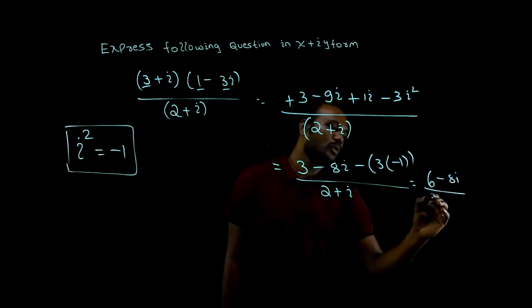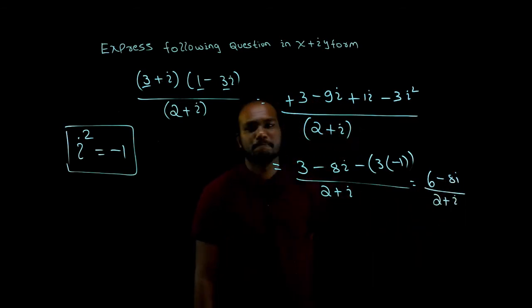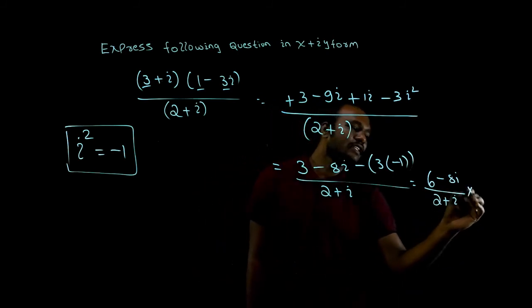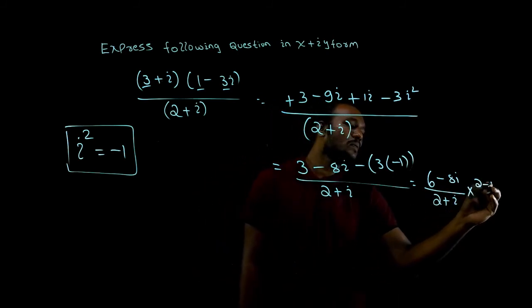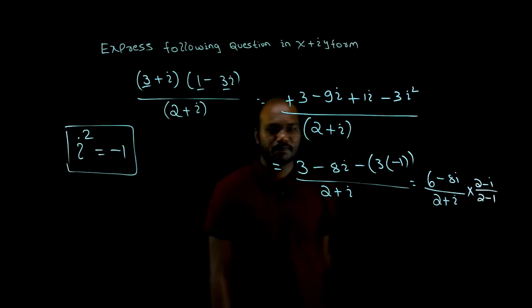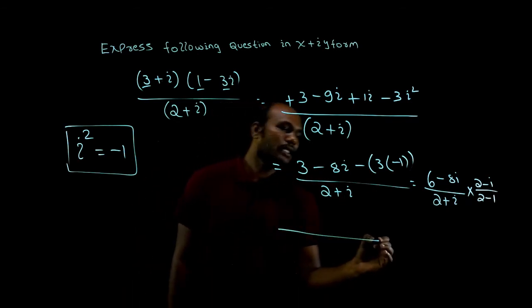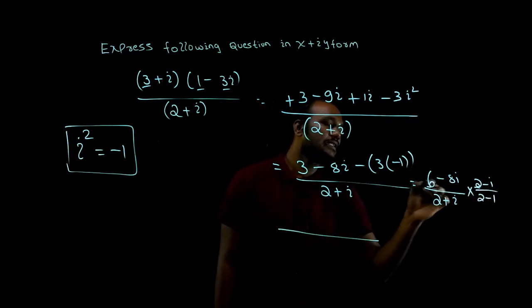Divided by 2 plus i. So I have to multiply this with conjugate. 2 plus i conjugate is 2 minus i by 2 minus i. In the numerator again, I multiply this with this, this with this.